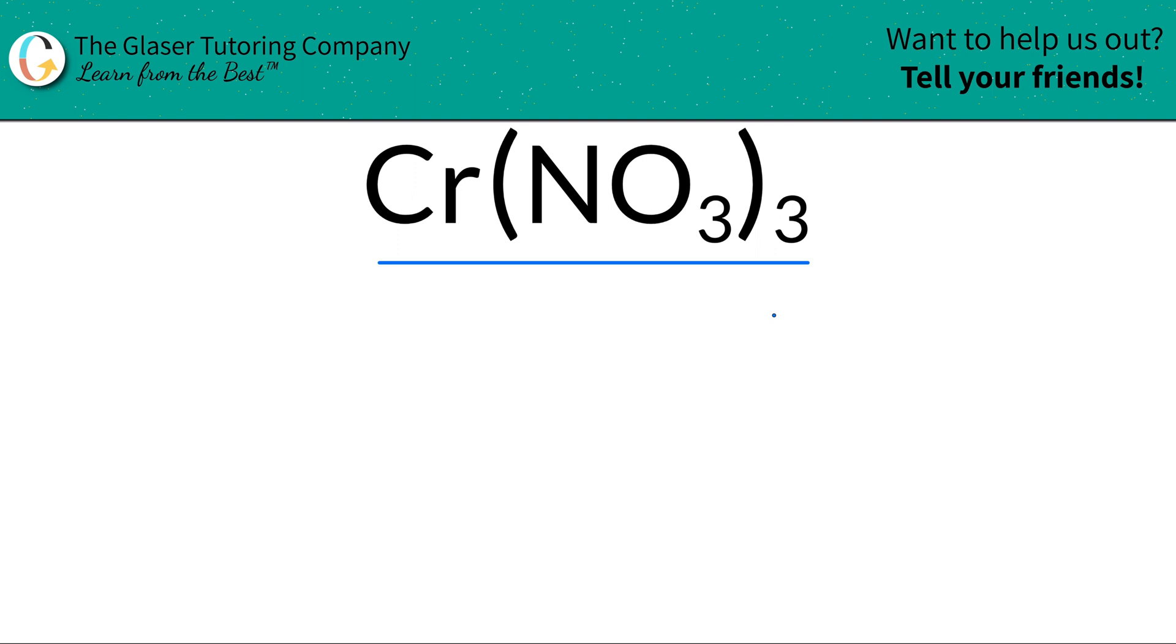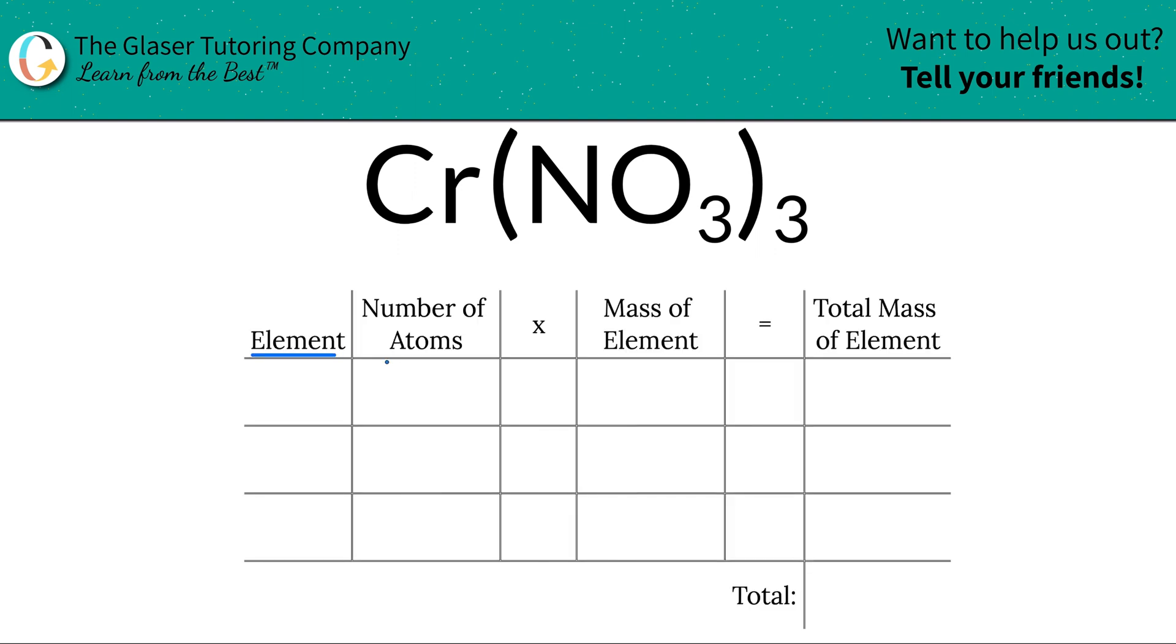First thing is we're going to solve for the molar mass. Let's take a look. So the first thing I'm going to do is write down the elements I see in the compound. We see chromium, Cr, we see nitrogen, N, and we see oxygen, O.